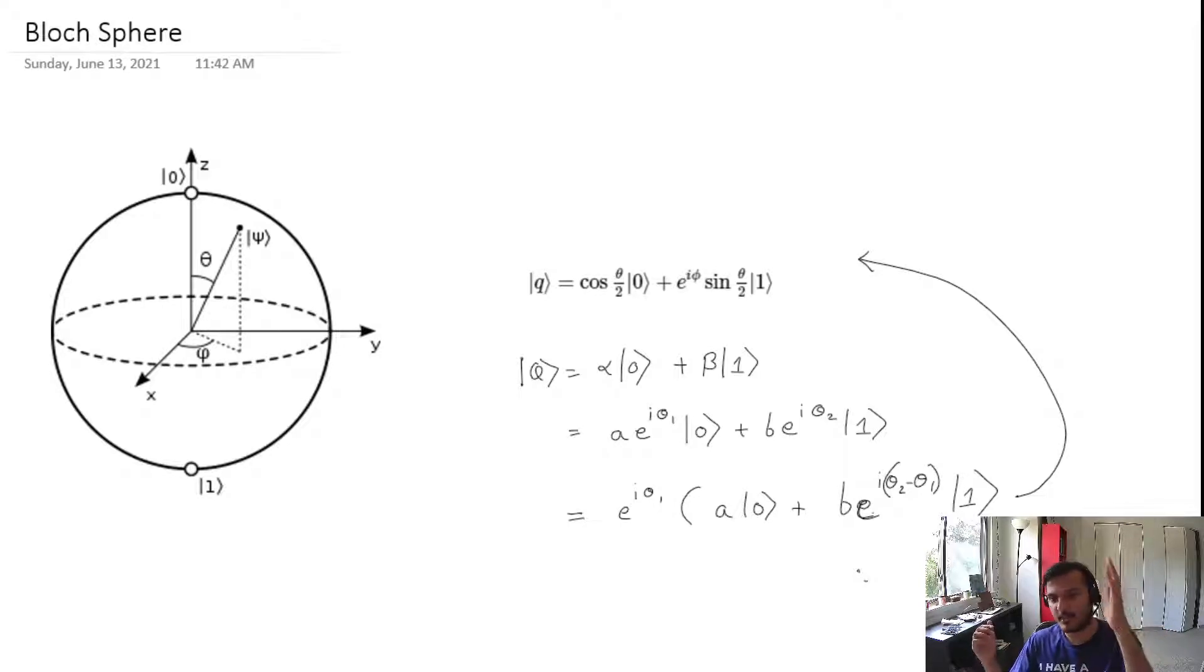States are these vectors pointing from the origin to any point on the sphere. The action of gates is basically rotating that vector around on the sphere. Actually, you know what, I'm getting ahead of myself. Let me explain this concept of state again.